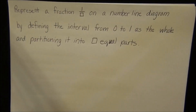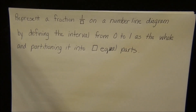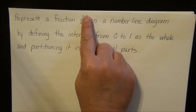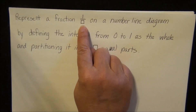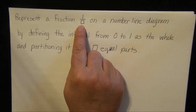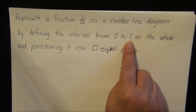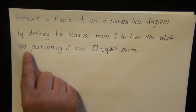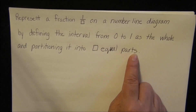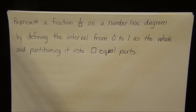Today's objective is a long one, but I'm going to break it down for you. We are going to represent a fraction 1 over blank — I'll add a D for denominator in the next lesson — on a number line diagram by defining the interval from 0 to 1 as the whole and partitioning it into blank equal parts. That sounds like what we've already learned, but with one thing added to it. So let's explore a little bit.